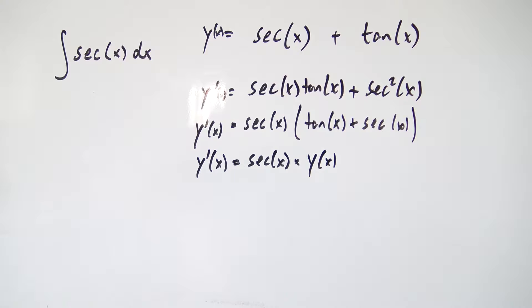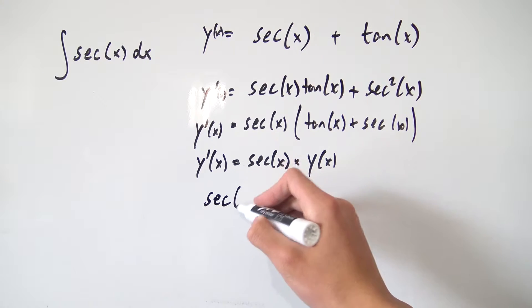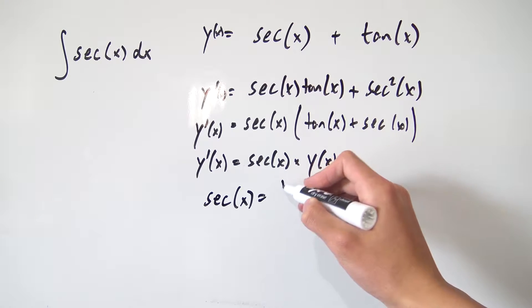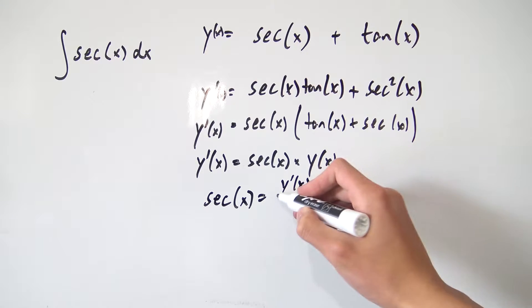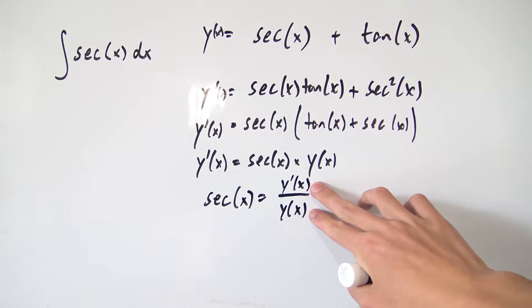And remember, we wanted to integrate the secant of x. So I want to actually just isolate the secant right here. So if we isolate our secant, we're going to have secant of x being equal to y prime of x divided by y of x. And this thing right here, this y prime over y is actually very useful. Because if you know a couple things about some integration properties, you'll know that this function in this form right here is very easy to integrate.